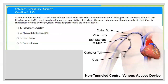Next question: a client who has just had a triple lumen catheter placed in the right subclavian vein complains of chest pain and shortness of breath. The catheter has three openings or channels — hence triple lumen. The client's blood pressure has decreased from baseline, and auscultation reveals unequal breath sounds. A chest X-ray is immediately ordered. What diagnosis should the nurse suspect? Options: pulmonary embolism, myocardial infarction, heart failure, or pneumothorax.